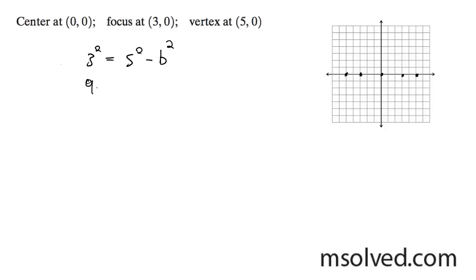So I'm going to do 9 equals 25 minus b squared. Subtract 25 over here, we get -16 equals -b squared. b squared equals 16, and then b equals 4.